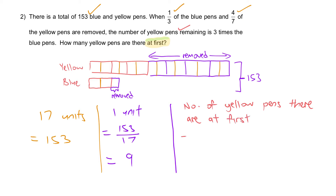Number of yellow pens at first: 9 times 14 — that is 90 plus 36 — equals 126.